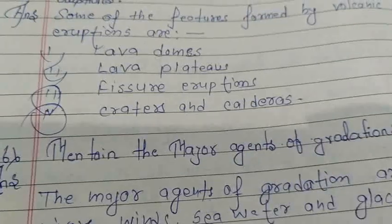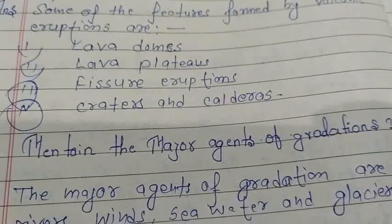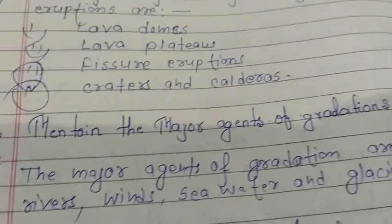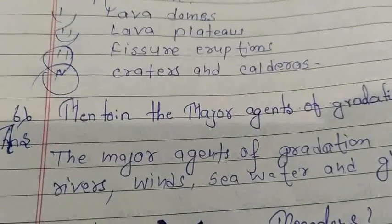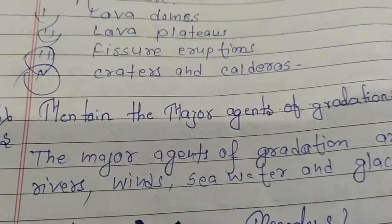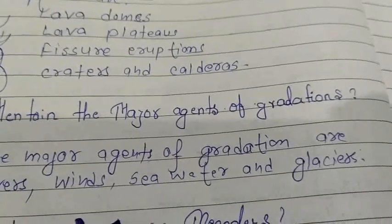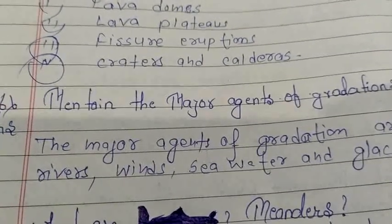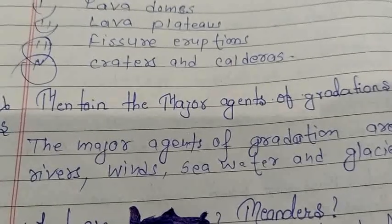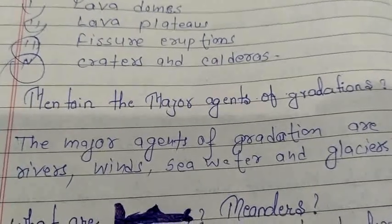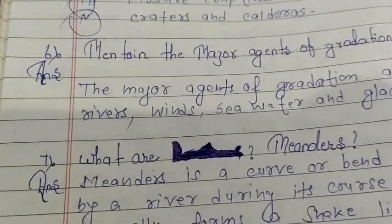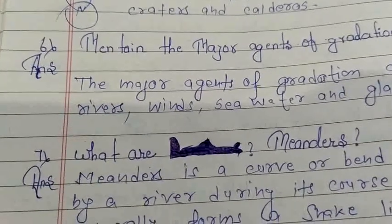Mention the major agents of gradation. The major agents of gradation are rivers, winds, sea, water, and glaciers. Now to question number third.